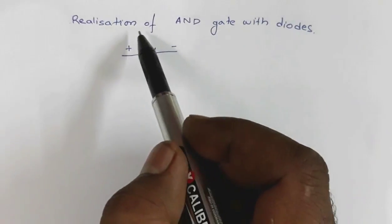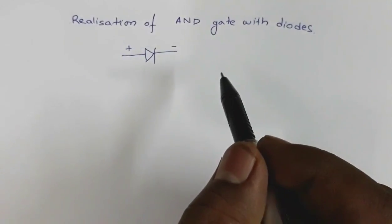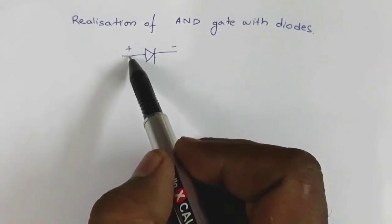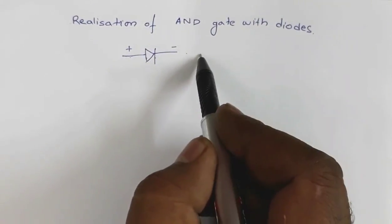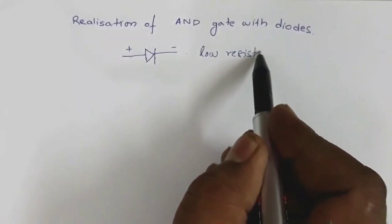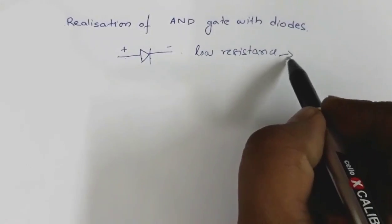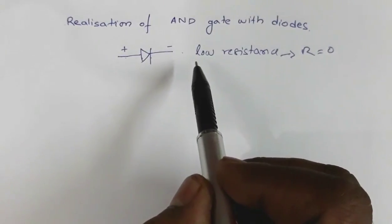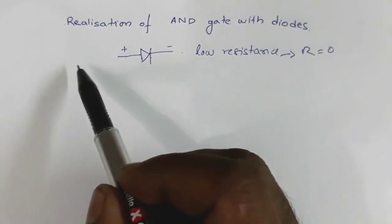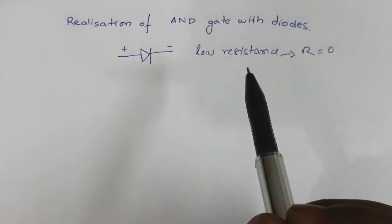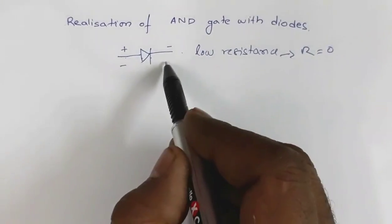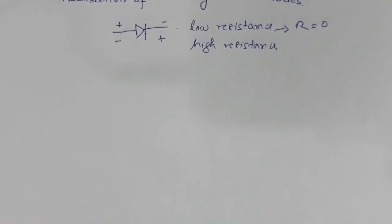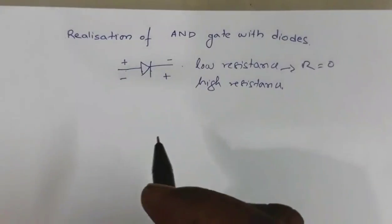First we will discuss the realization of AND gate with diodes. Before we go into the details, we need to know that in a p-n junction diode, if it is forward biased — high potential on the P side, low potential on the N side — the diode will offer low resistance, almost equal to zero. So there is no potential drop, meaning the two opposite ends will always be at the same potential. If it is reverse biased, it will offer high resistance. This concept will be used in the construction of the AND gate.